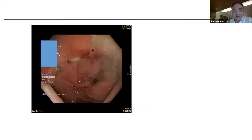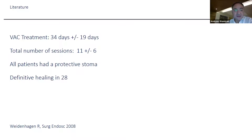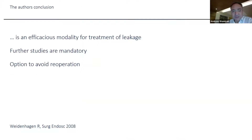The first paper on endosponge, published in 2008, was a cohort report of a new technique on 29 patients. Median treatment lasted one month with a total median of 11 sessions. All patients also had a protective stoma. Out of 29 patients, 28 achieved definitive healing. The authors concluded this is a wonderful, effective modality for the treatment of leakage and that further studies are mandatory.